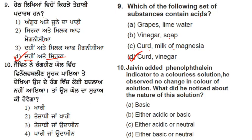The tenth question: Jaywin added phenolphthalein indicator to a colorless solution and observed no change in color. What is the nature of this solution? Phenolphthalein gives no color change in acidic or neutral solution. With a basic solution it gives pink. So the correct answer is either acidic or neutral — the third option.